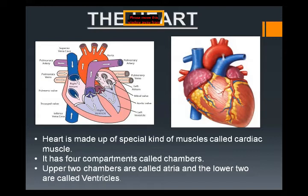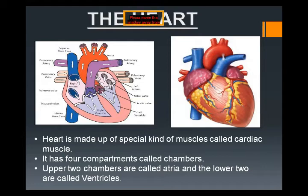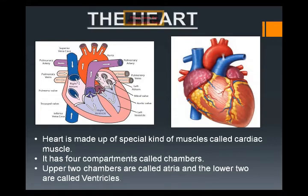To summarize: the heart has four chambers — two upper atria and two lower ventricles. It is a pumping organ that works by contraction and relaxation. When the heart relaxes, both atria fill with blood. When the atria fill, they contract and push blood into the ventricles through valves. When the ventricles fill, they contract and push blood out through the valves into the arteries, which supply it to different parts of the body.